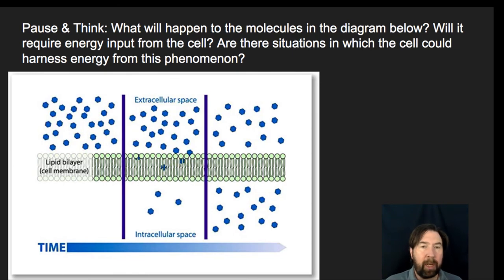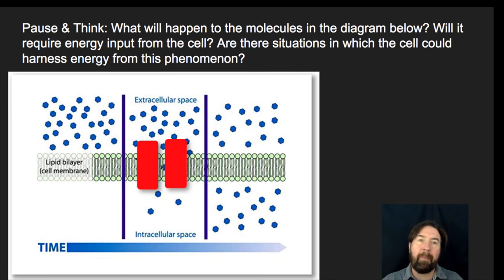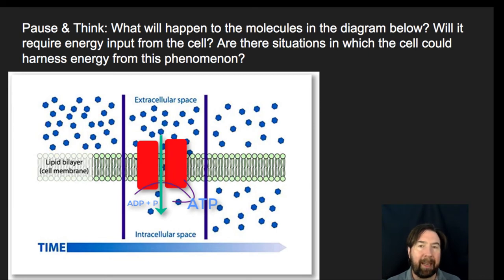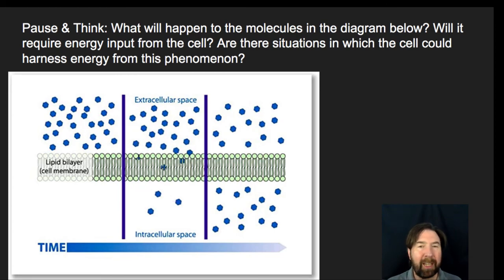If those blue molecules are large or charged, and the transport channel is something like an ATP synthase, then as those molecules move from high concentration to low concentration they allow you to phosphorylate a molecule. You can couple the natural kinetic energy of diffusion from high to low concentration with the formation of ATP. We actually see this in many different environments — the use of ATP synthase and the diffusion of molecules to power the making of ATP, which takes place in both chloroplasts and mitochondria.